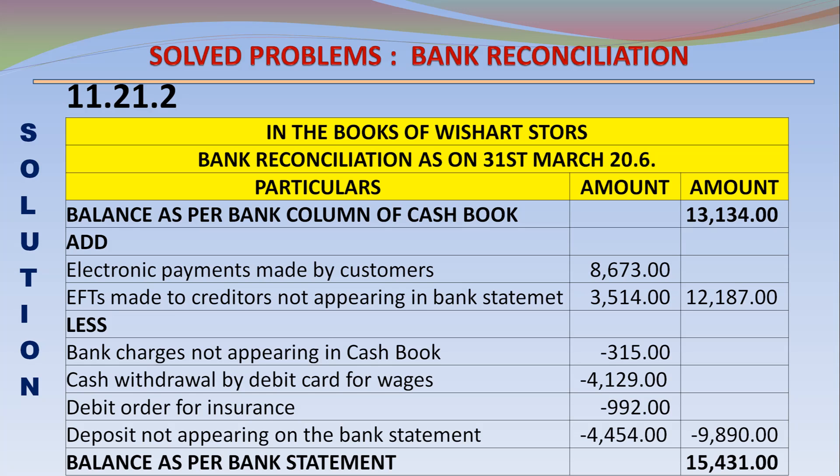Less: debit order for insurance 992. Less: deposit not appearing on the bank statement 4,455. Total deductions 9,890. Balance as per bank statement 15,431.